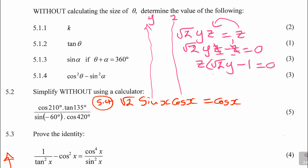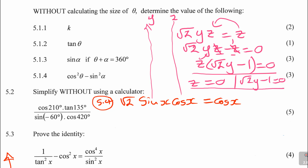That's what you'll be having. Then you're going to say: let z be equal to 0, or square root of 2y minus 1 is equal to 0. And then you start solving. Even here, square root of 2y minus 1 — that's what you'll be doing.